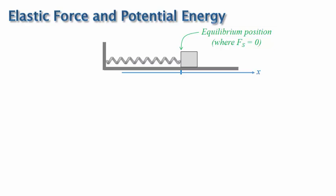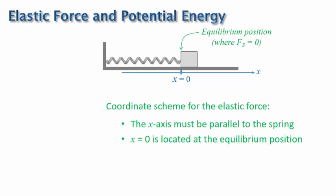Here are the two rules that I just mentioned for drawing the coordinate scheme. The x-axis must be parallel to the spring, and x equals zero is located at the equilibrium position. And I'll add one more rule. The positive x-direction is arbitrary. So in the example shown, I arbitrarily defined the positive x-direction to be to the right, but I could have defined it to be to the left.